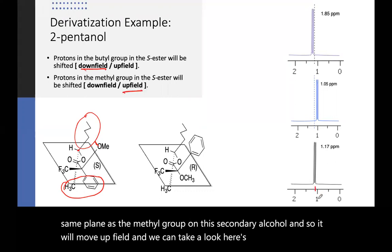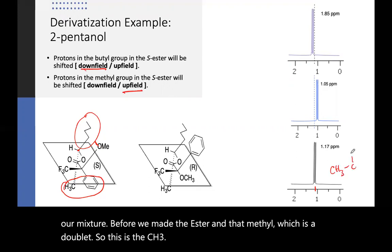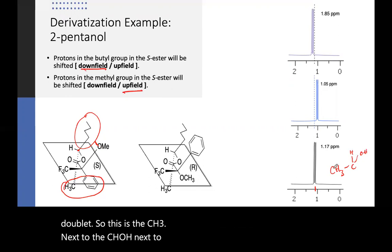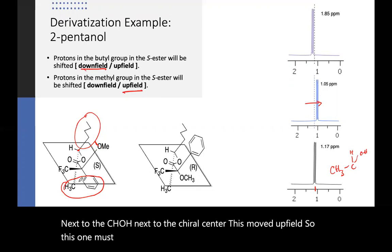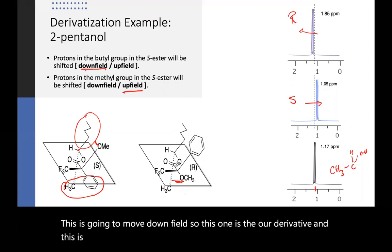Here's our mixture before we made the ester and that methyl, which is a doublet. So this is the CH3 next to the CHOH next to the chiral center. This moved upfield. So this one must be next to the phenyl. This must be the R derivative because the methyl moved downfield. So if I did it with the R, this is going to move downfield. So this one is the R derivative and this is the S derivative of the ester. So I haven't changed the pentanol. I just reacted it with two possible different chiral esters.